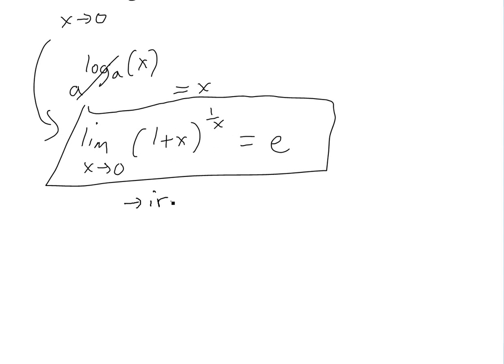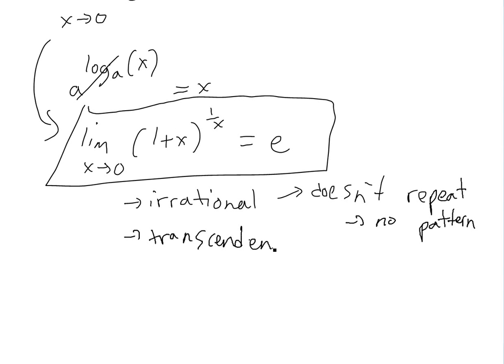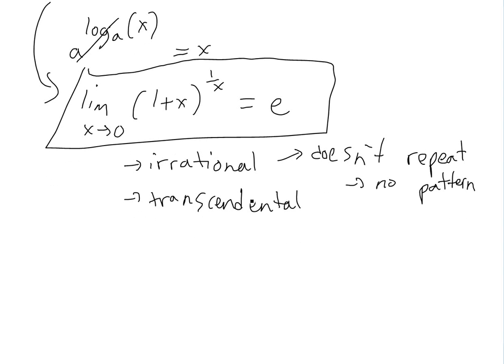And e is a rational number, I'll show you in my other video what rational and irrational numbers are. It doesn't repeat, as in there's no pattern, and it goes on forever. So it's also a transcendental number. You can see my other video on what these are. So it's also that, it's like pi.